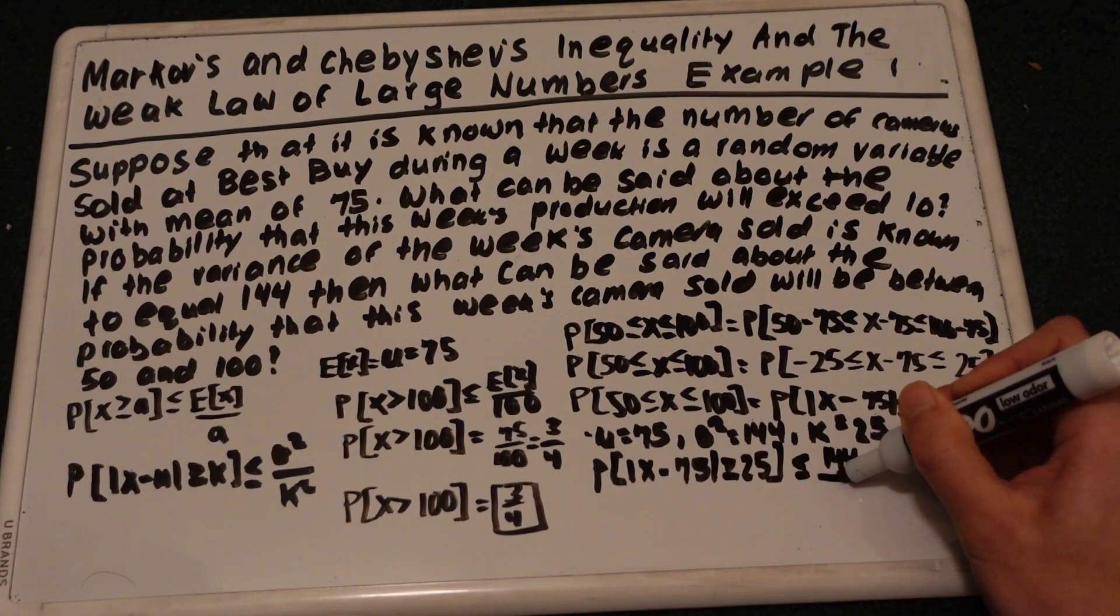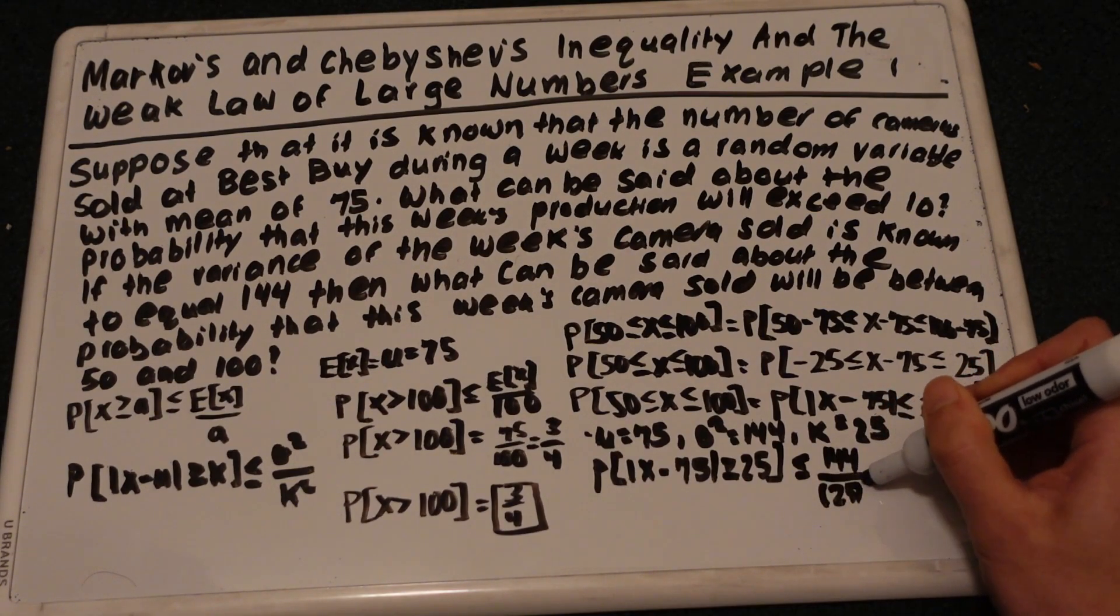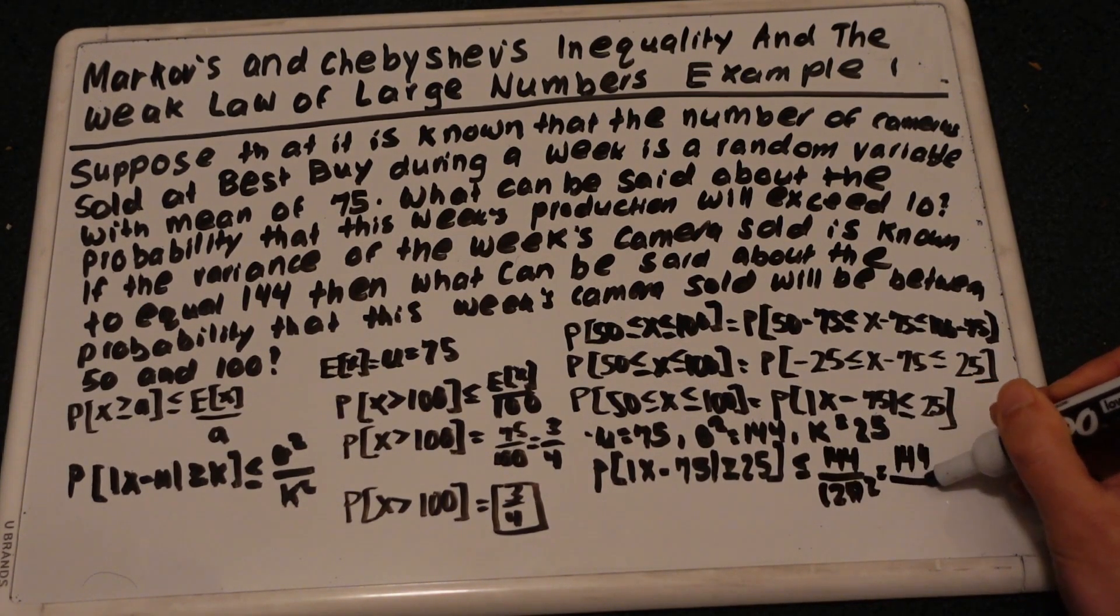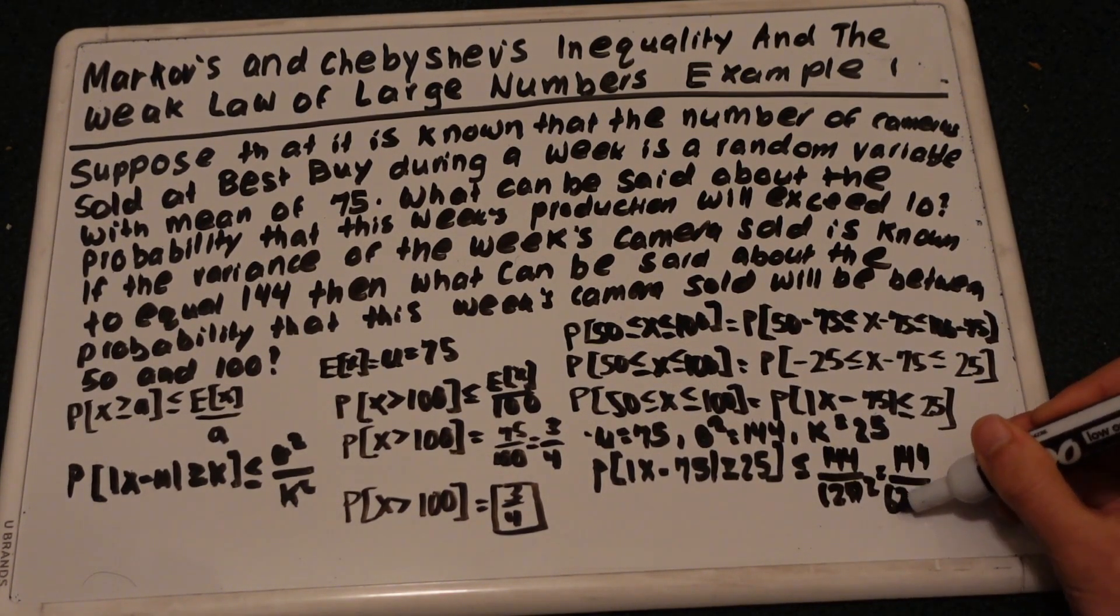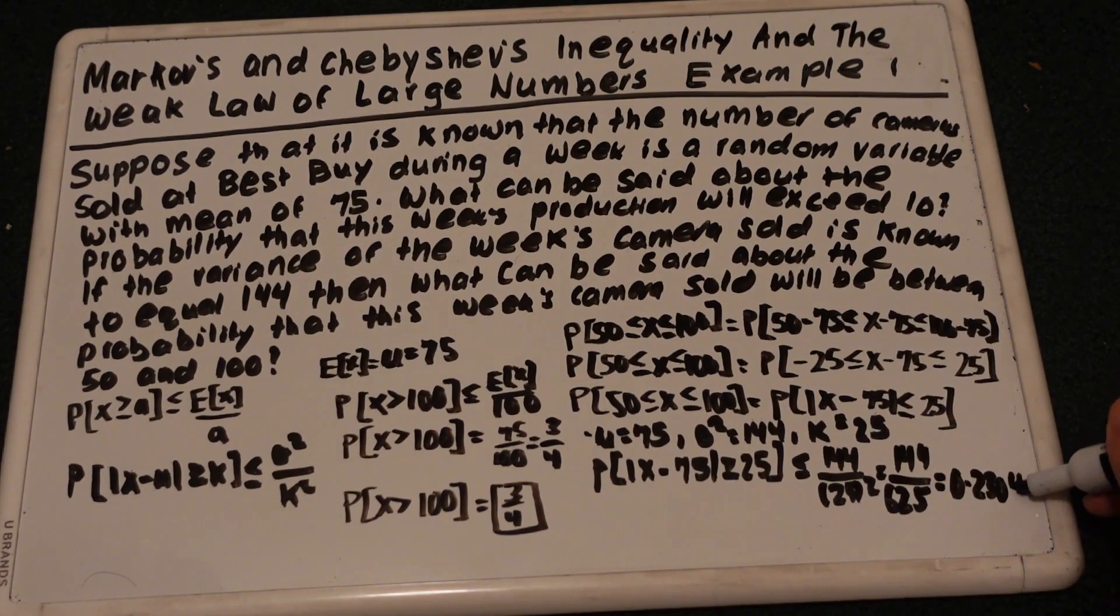It would be 144 over 25 squared. And simplifying from here, we get 0.2304.